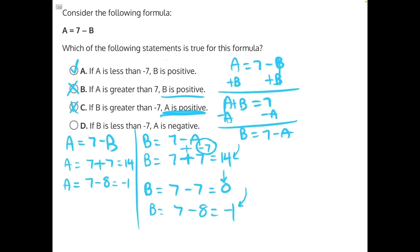Answer choice D says if B is less than negative 7, A is negative. Again, we have 7 minus negative 7, and that would give us a positive 14.